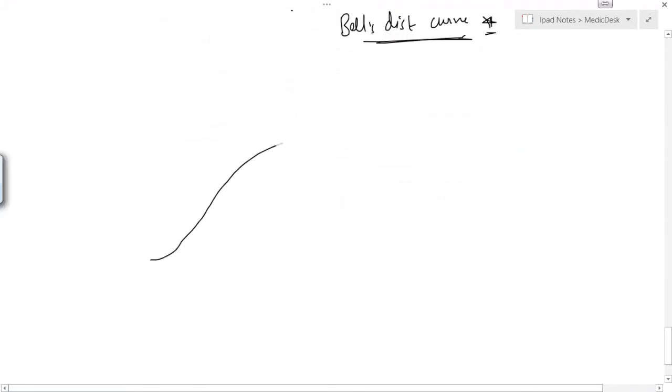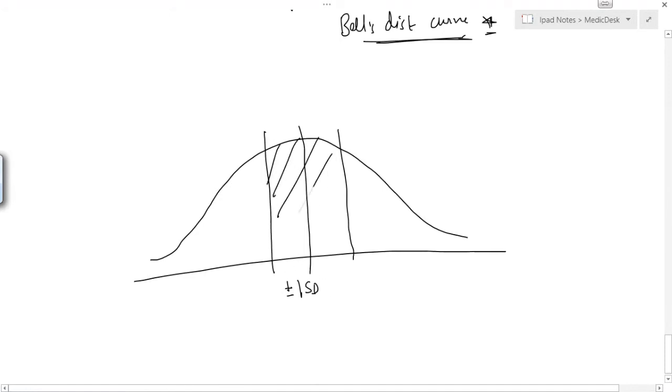Now if we divide the normal curve into different parts. Suppose this is the mean and this is the area. This area would be called as plus or minus 1 standard deviation and will include 68% of the observation.